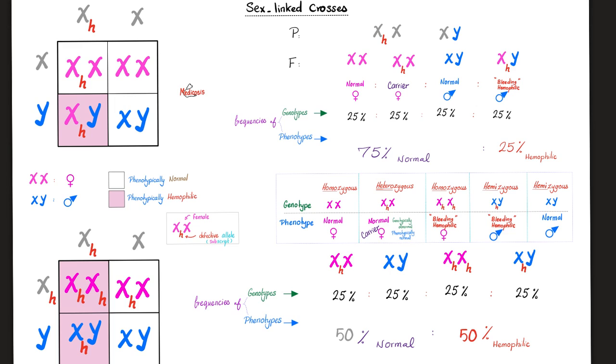25% carrier females, 25% normal males, 25% hemophilic females, and 25% hemophilic males. Phenotypically, half of them are fine, not bleeding. Half of them have hemophilia, bleeding.